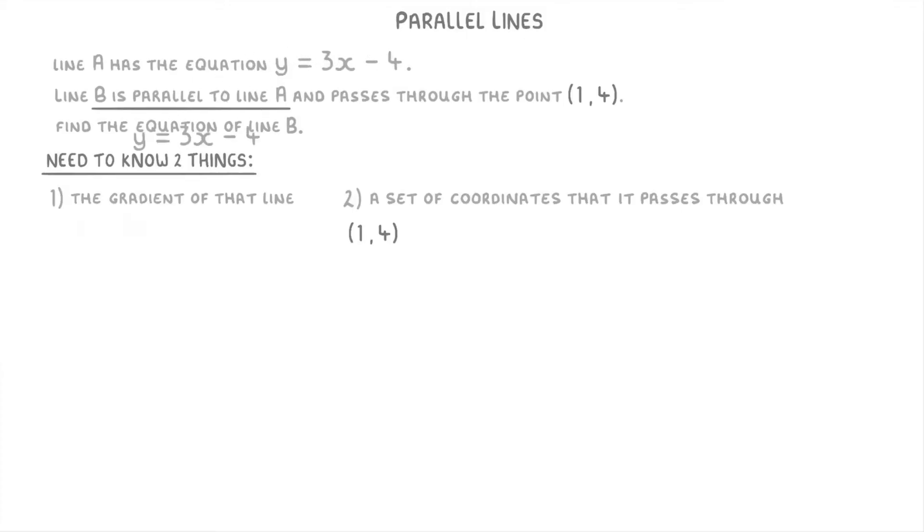If we take a closer look at the equation of line A, we can see that it's already in the form of y equals mx plus c. So the gradient, which remember is represented by the letter m, must be 3.